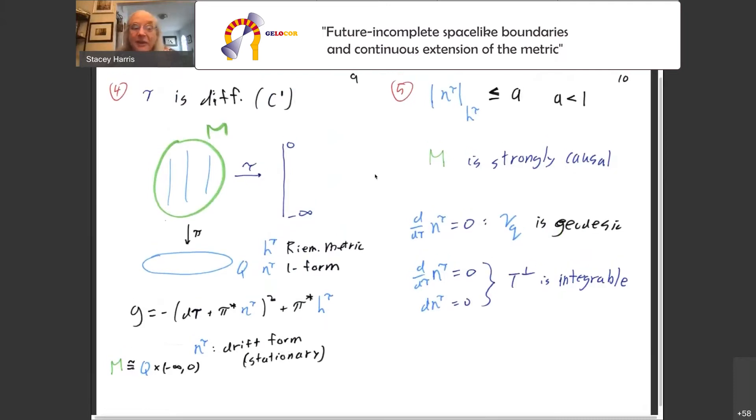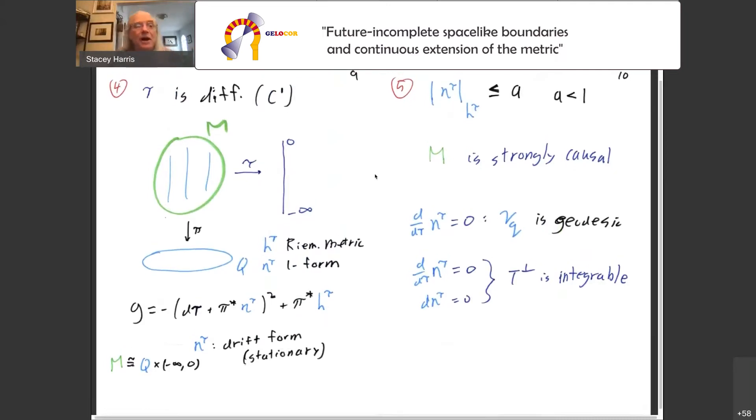Next assumption is I want tau to be differentiable, at least C1. If we make that assumption, then we have this nice reduction on the quotient space Q, and also tau, our now differentiable time function, goes from minus infinity to zero. This allows us to decompose the spacetime metric, and this is where all the magic happens. So we can write the timelike portion here as d tau plus the pullback of some one form eta on Q, that's squared. Then we also have a Riemannian metric h sub tau on Q as a spacelike portion.